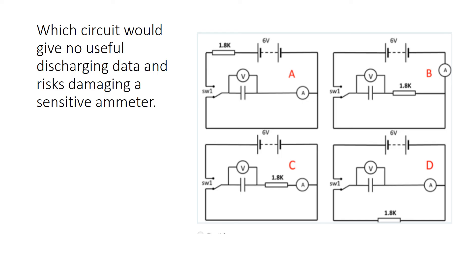Final question: which circuit would give no useful discharging data and risks damaging a sensitive ammeter? The key here is discharging data — we're looking for a situation where we are not discharging through a resistor. We can immediately cross off C because it charges and discharges through a resistor. We can also cross off D because we pointed out in the last question that it discharges through a resistor, just not charging through one.